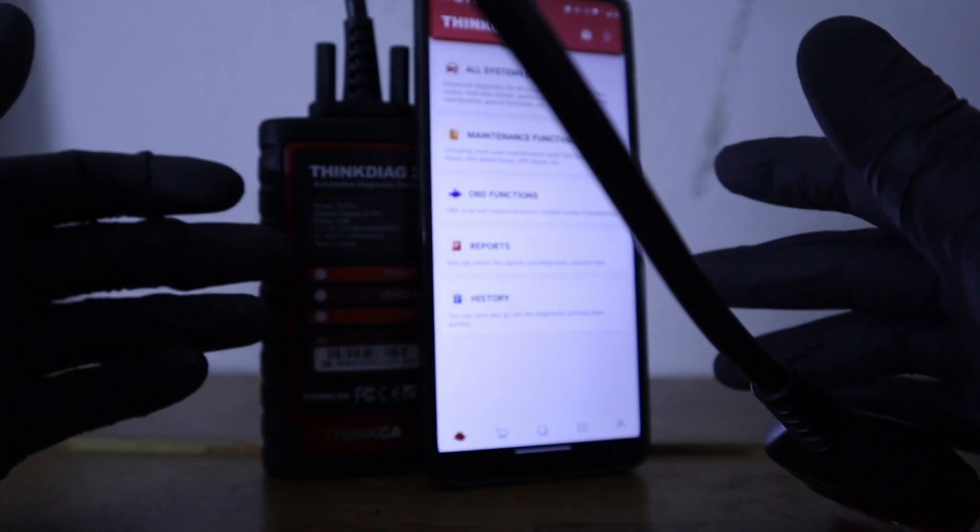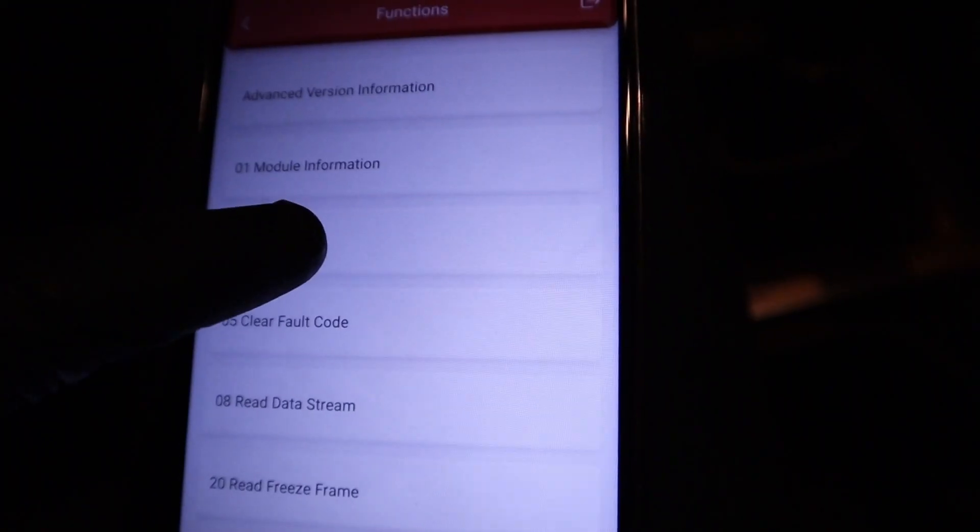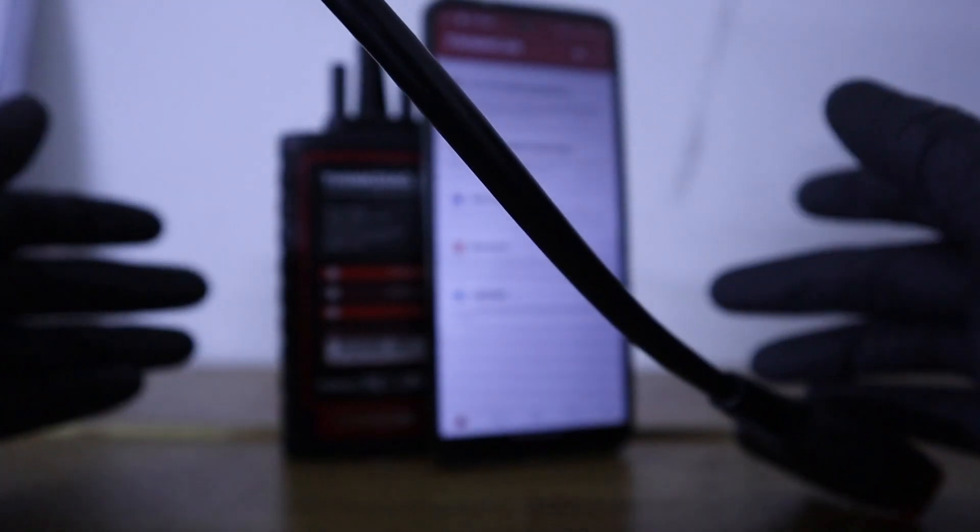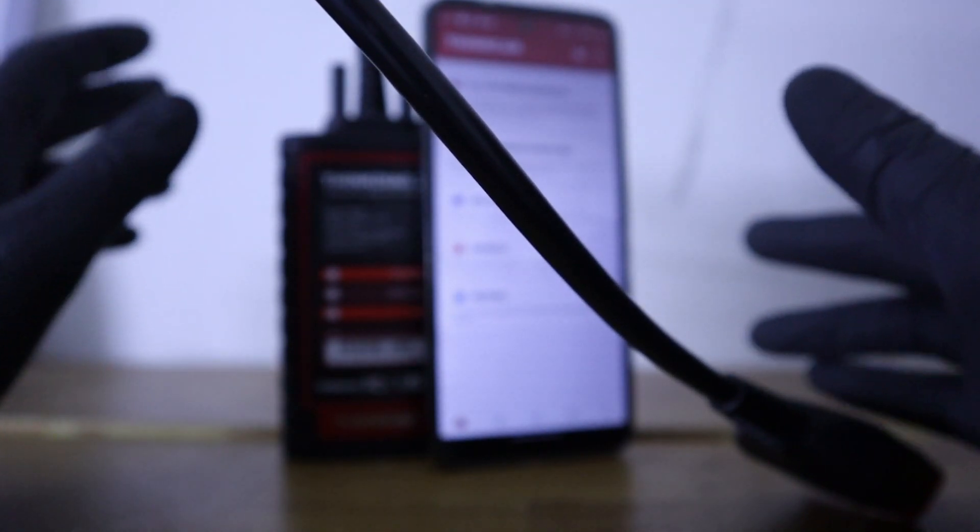Basically, this is a professional scanner and it is cheaper, because it uses your smartphone. So obviously, you don't have to pay for the built-in tablet. And if you are wondering about price, the ThinkDiag 2 costs around $150.